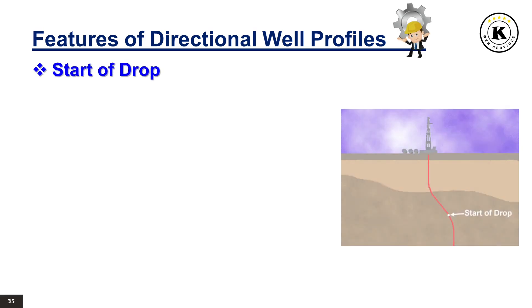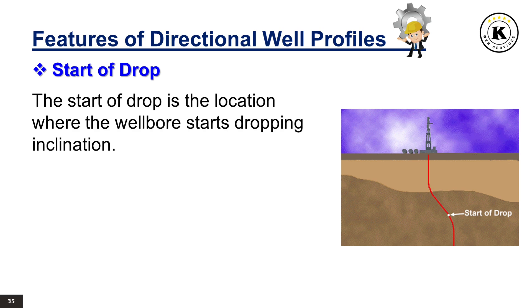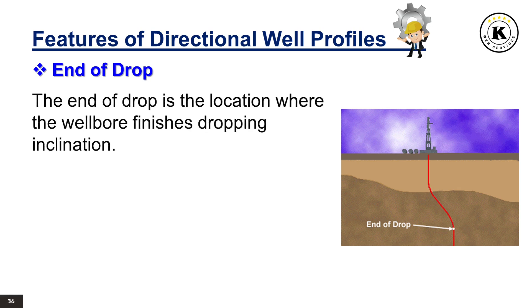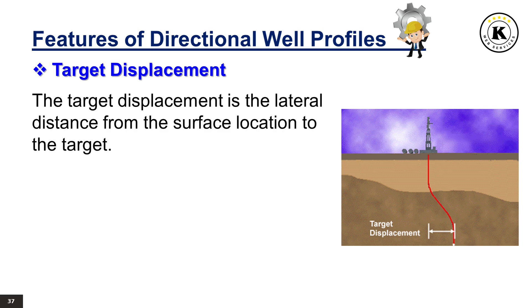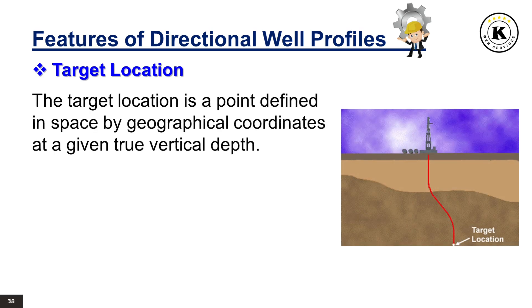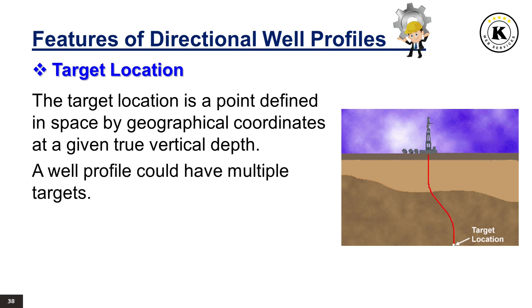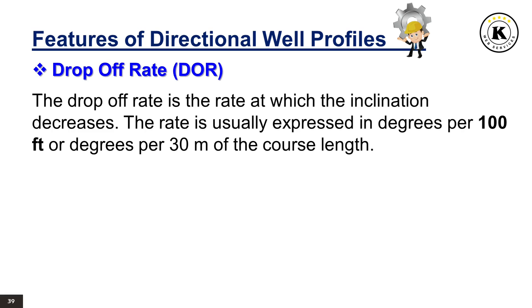Start of Drop: The start of drop is the location where the wellbore starts dropping inclination. End of Drop: The end of drop is the location where the wellbore finishes dropping inclination. Target Displacement: The target displacement is the lateral distance from the surface location to the target. Target Location: The target location is a point defined in space by geographical coordinates at a given true vertical depth. A well profile could have multiple targets. Drop Off Rate: The drop off rate is the rate at which the inclination decreases, usually expressed in degrees per 100 feet or degrees per 30 meters of the course length.